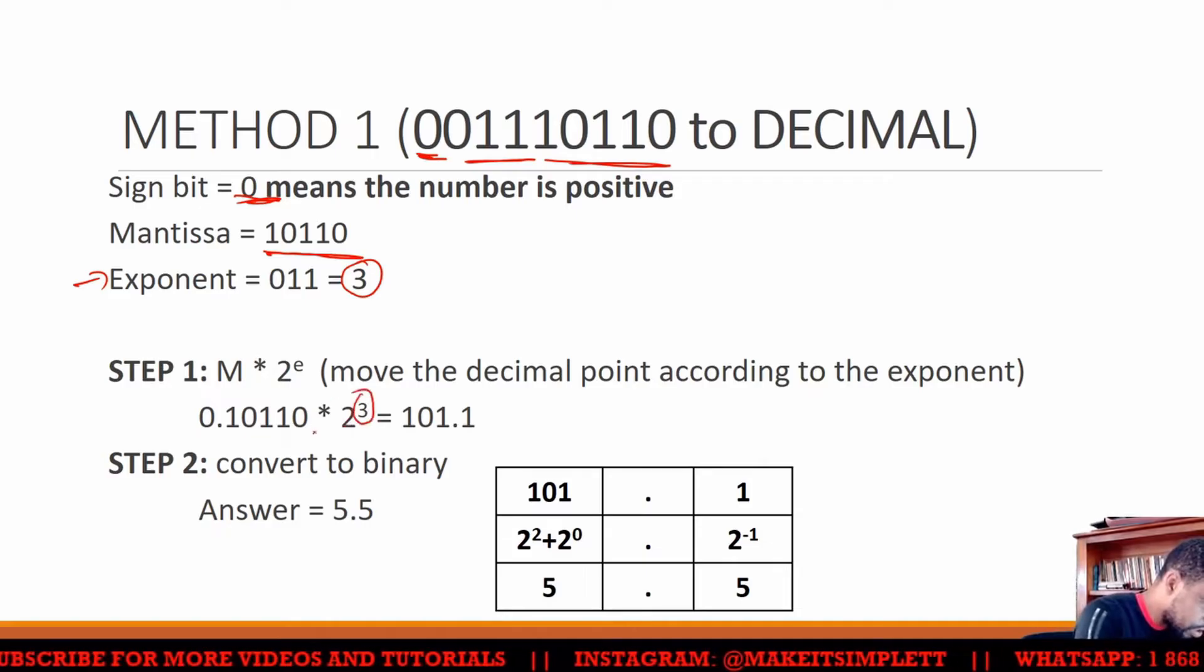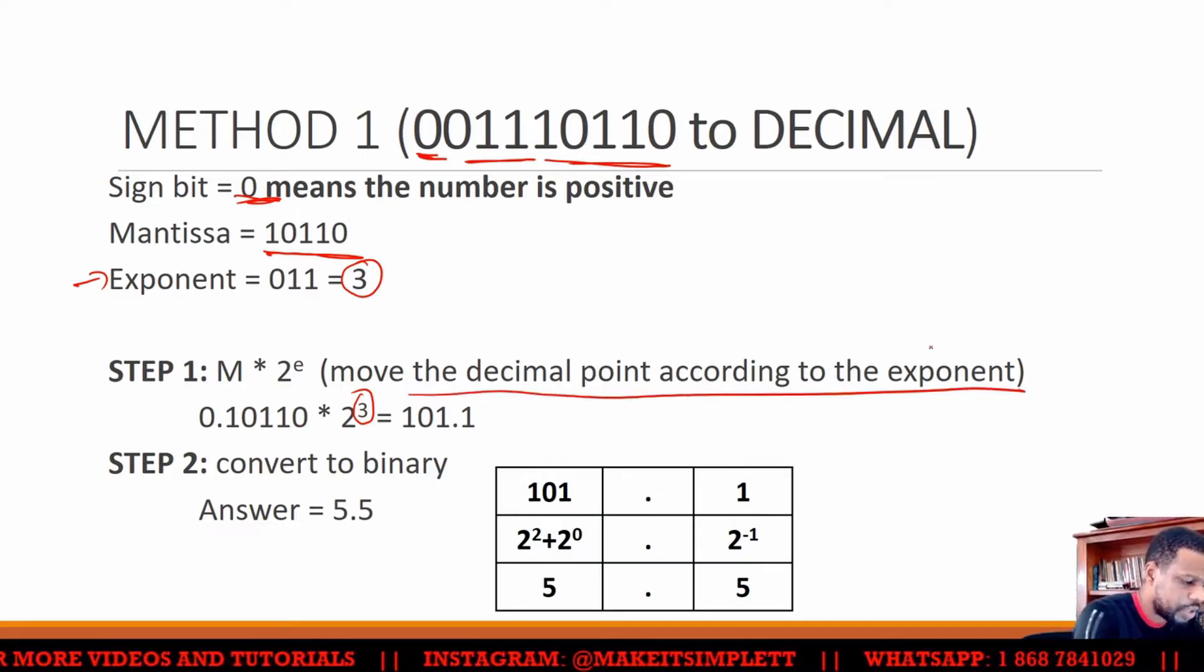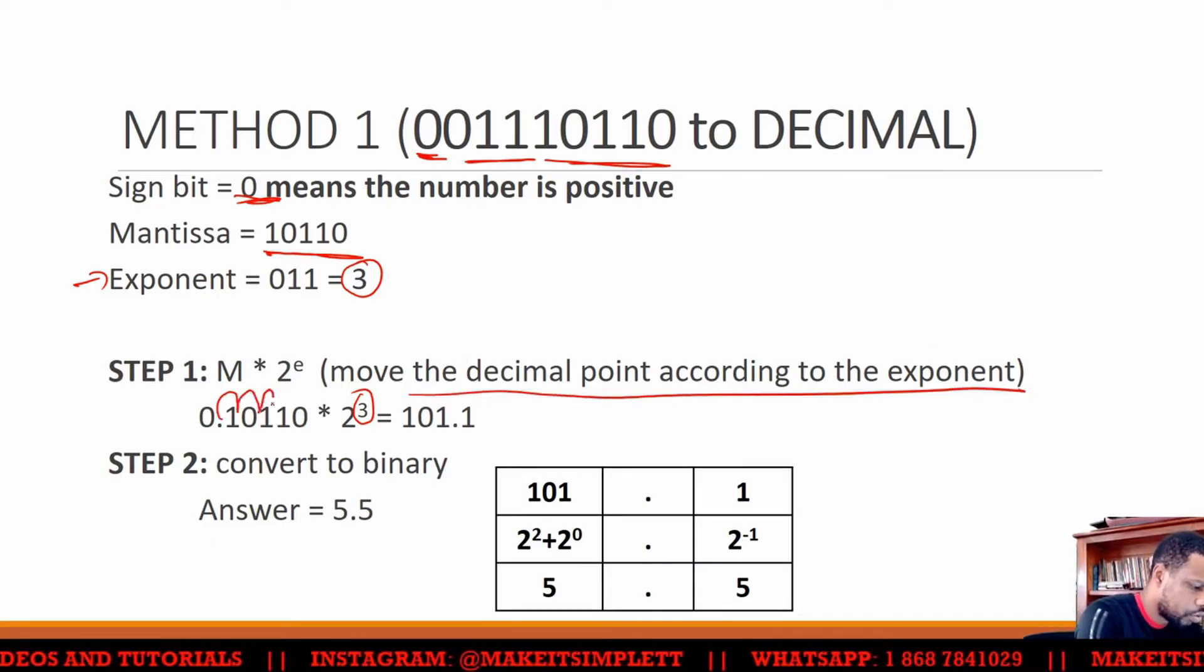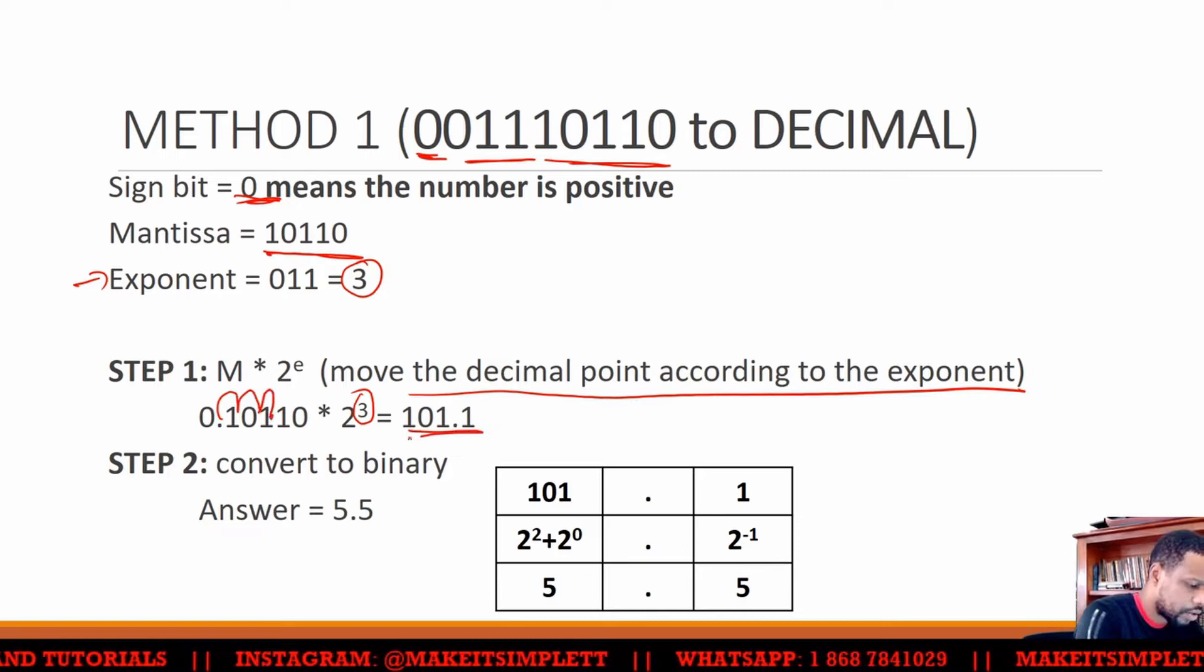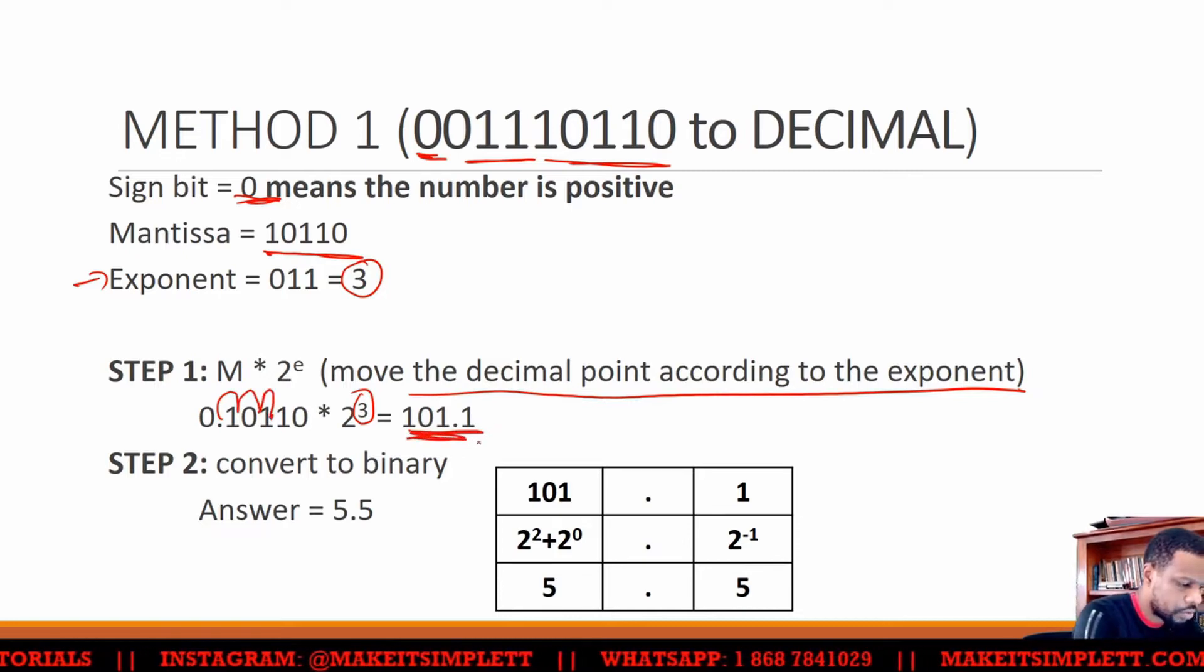So the 3 now is going to tell you how many spaces you're going to move the decimal place. So the decimal place will be moving 1, 2, 3. If we move it 3 spaces, we're going to get 101.1.